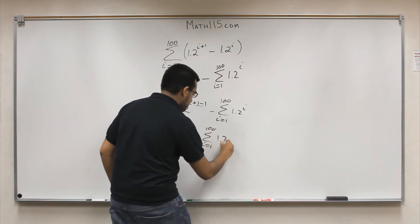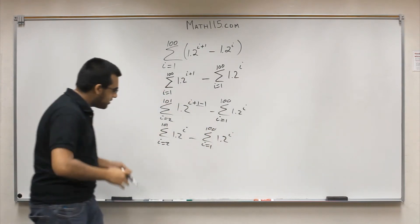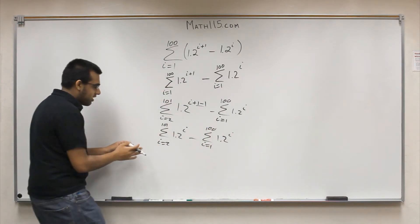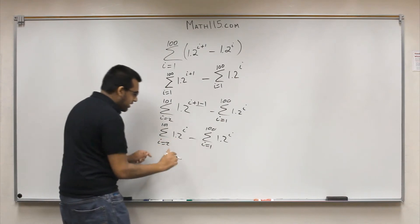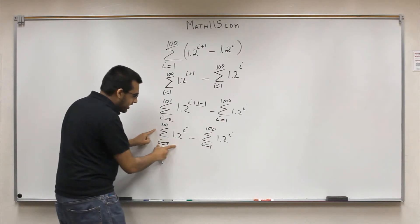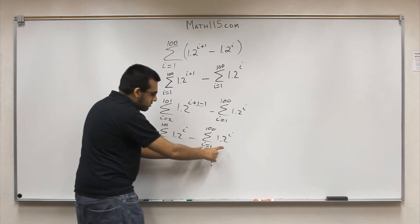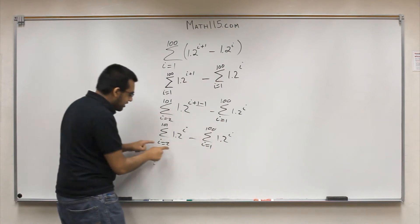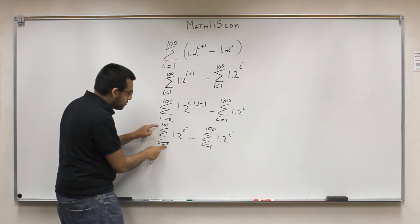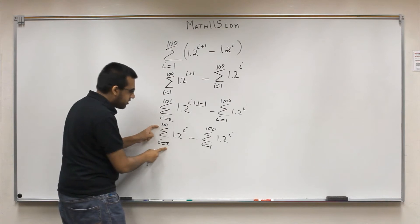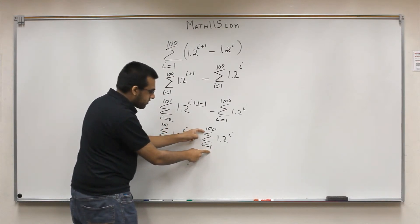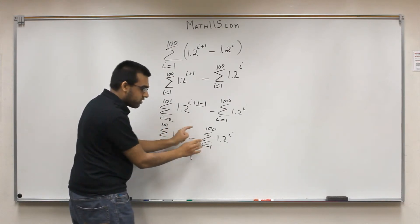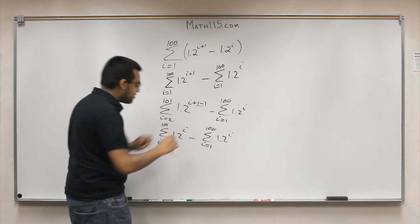So simplifying, we get the summation from i equals 2 to 101 of 1.2^i, minus the summation from i equals 1 to 100 of 1.2^i. Now it becomes more obvious — we can see that the portion where these two summations overlap is between the range 2 to 100. The portion from 2 to 100 on the left is identical to the portion from 2 to 100 on the right. The rest is what remains.